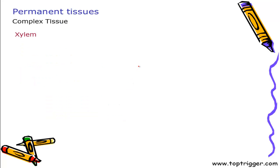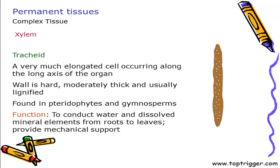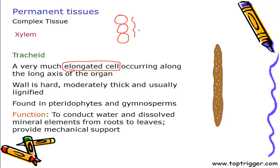Tracheids are very elongated cells — not tube-like cells. A large number of cells aggregate together and form a structure. Within each cell, there are pores in the wall and conduction of water occurs through these pores only — not through any tube-like structure. The wall is hard, thick and lignified. Tracheids are present in primitive plants in the form of pteridophytes and gymnosperms. Their prime function is conduction of water and, being hard, they also provide mechanical support to the plant.